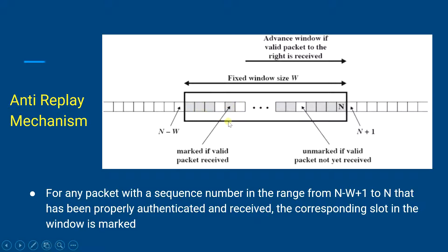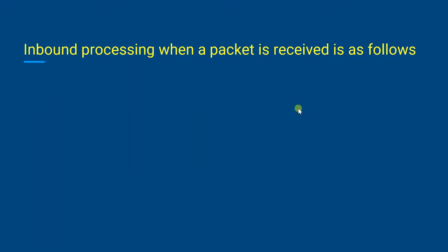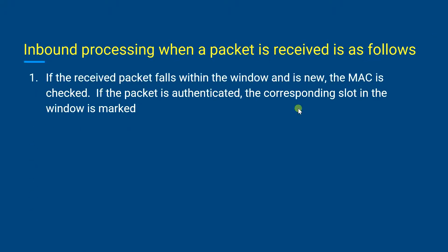The unmarked slots — where a valid packet has not been received — are marked with white, while received packets are indicated with a gray color. For inbound processing, if a received packet falls within the window and is new, the MAC will be checked. If the packet is authenticated, the corresponding slot in the window will be marked.